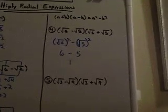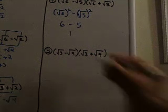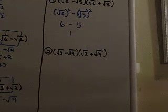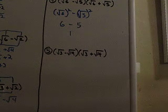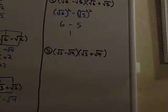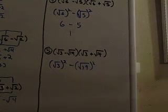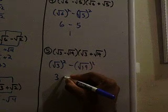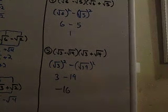Let's look at number 5 — same principle. The square root of 3 minus the square root of 19 times the square root of 3 plus the square root of 19. They're basically the same — the only difference is plus and minus. So we have a binomial times a binomial where the only difference is plus and minus, meaning the difference of two squares is working in the background. Square root of 3 squared is 3, and square root of 19 squared is 19. So 3 minus 19 is negative 16.